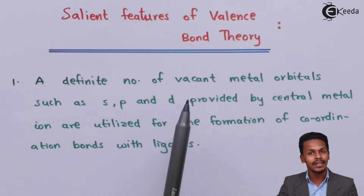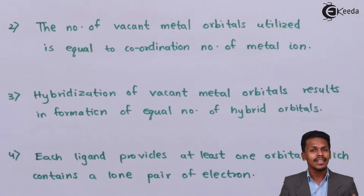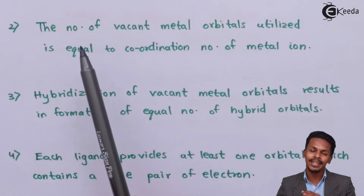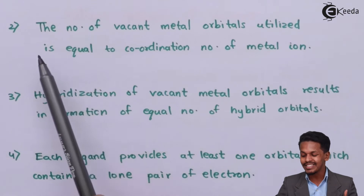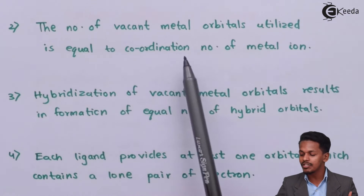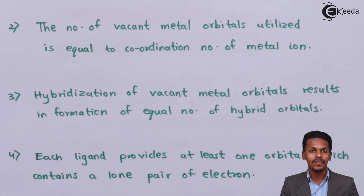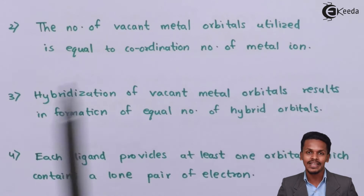The second point: the number of vacant metal orbitals utilized for bond formation with the ligands is equal to the coordination number of the metal ion. So the more bonds formed between the metal and the ligands, the higher the coordination number.